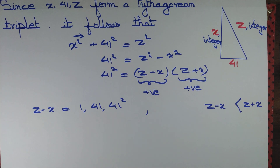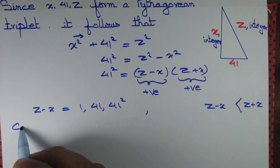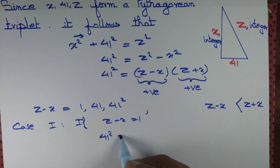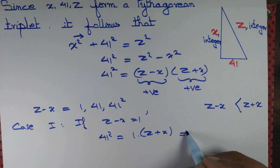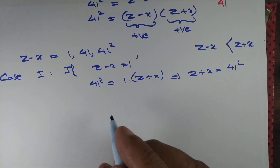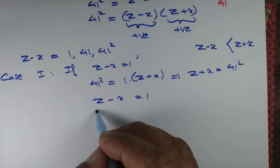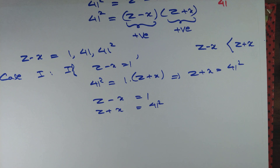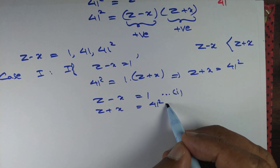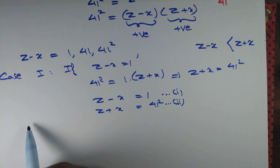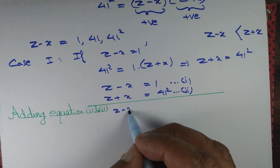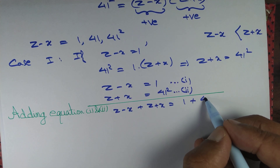Now z minus x is definitely smaller than z plus x. In Case 1, if z minus x equals 1, then by this identity 41 squared equals 1 into (z plus x), which gives us z plus x equals 41 squared. So we have two equations: equation 1 is z minus x equals 1, and equation 2 is z plus x equals 41 squared. Adding equation 1 and equation 2: z minus x plus z plus x equals 1 plus 41 squared.